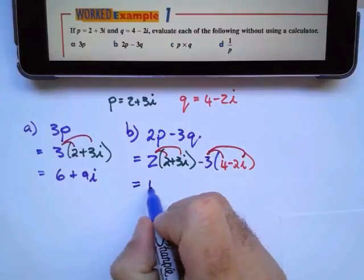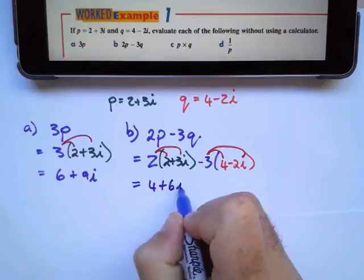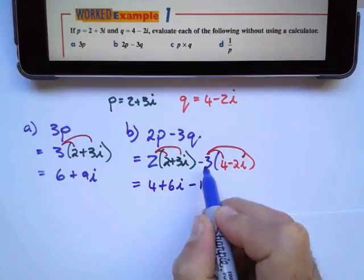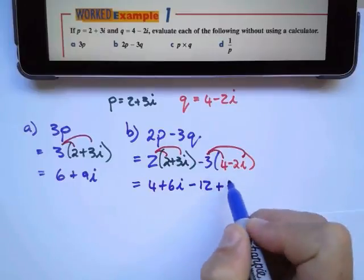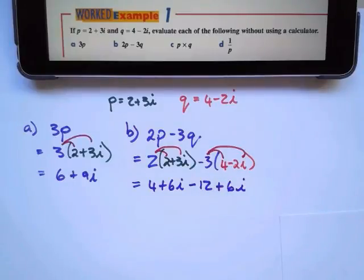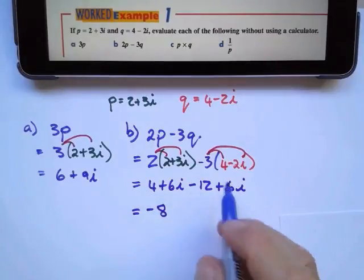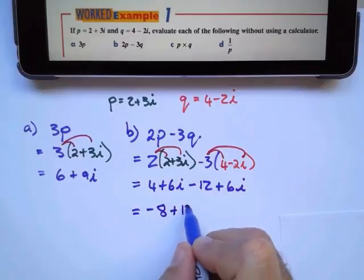I'm going to get 2 times 2 is 4 plus 6i. Negative 3 times 4 is negative 12, negative times negative is positive 6i. I'm now going to collect my like terms. 4 take away 12 is negative 8, 6i plus 6i is positive 12i.